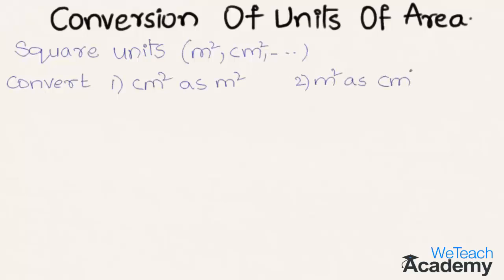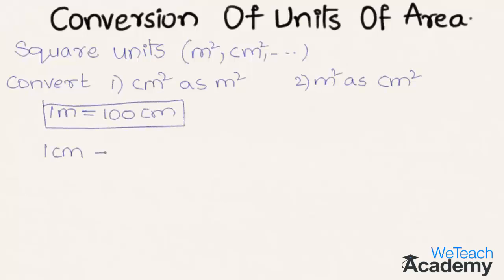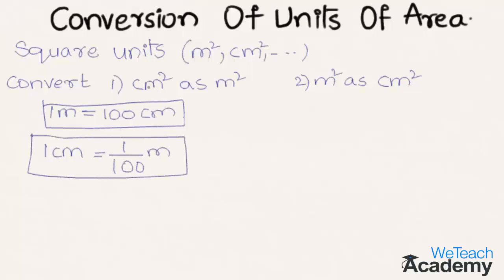We already know that one meter is equal to hundred centimeters, so that implies one centimeter is equal to one by hundred meters. Now, to convert centimeter square to meter square, let us square this: we get one centimeter square is equal to one by hundred meters, whole square.